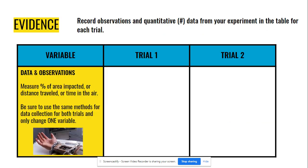Next, this is where we're going to record our evidence. So we're going to record observations, which could be description of how much of that egg is cracked or not cracked. But then we want to quantify things. We need to come up with data or numbers to describe what's happening.